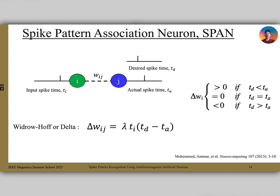The SPAN algorithm is based off the Widrow-Hoff or delta rule. This rule uses the difference between the desired spike time and the actual spike time of a neuron to update the weights. After some manipulation, the weights should increase if the actual time is greater than the target time, stay the same if the timing is the same, and decrease if the actual time is less than the target time.